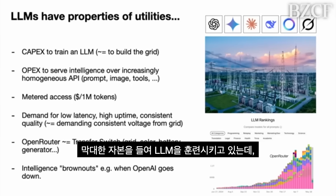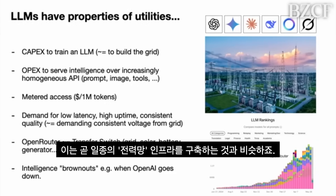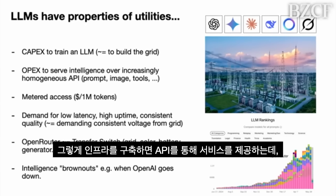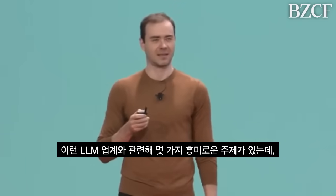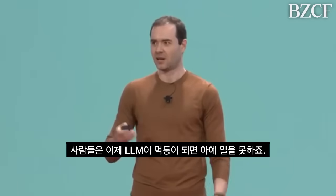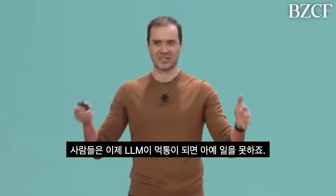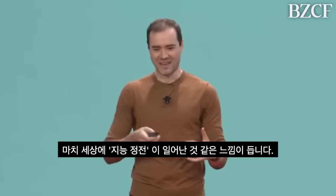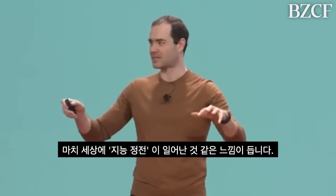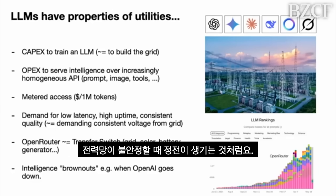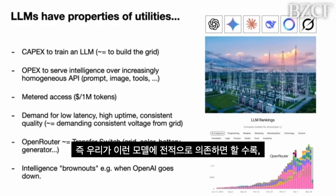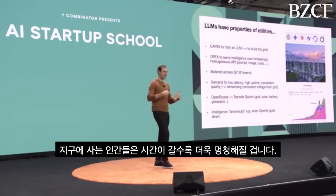These labs spend CapEx to train LLMs — equivalent to building out a grid — and then there's OpEx to serve that intelligence over APIs to all of us through metered access, where we pay per million tokens or something like that. What's also fascinating: in the last few days, a lot of LLMs went down and people were stuck and unable to work. When state-of-the-art LLMs go down, it's actually like an intelligence brownout in the world — like when voltage is unreliable in the grid and the planet just gets dumber.